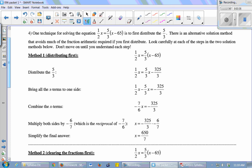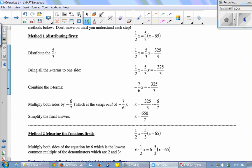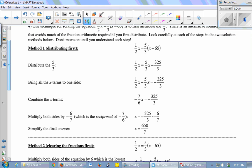The rest of the class, we're going to be working on solving equations that just have one letter in them. So that y equals x plus 4, there was an x and a y. Now we're just going to think about x. So if I wanted to solve the equation (1/2)x equals (5/3) times (x minus 65), one technique would be to distribute that 5 thirds. There's an alternate solution method that avoids a lot of the fraction stuff. So I'm going to go through both of these methods, and you can pick which one you like the best.